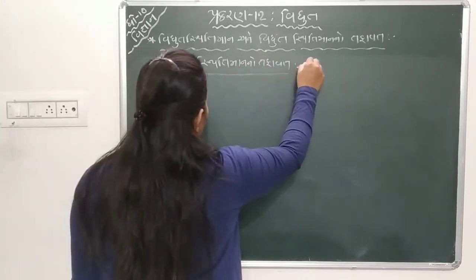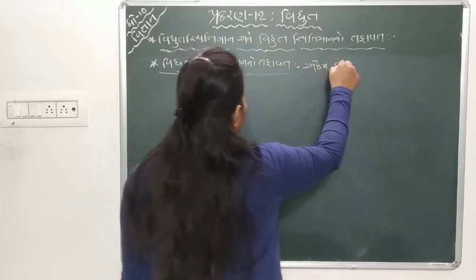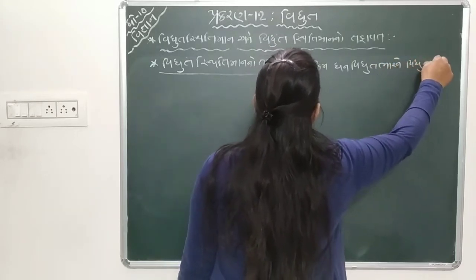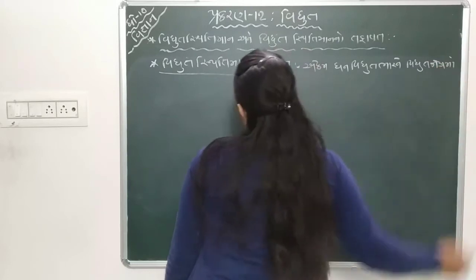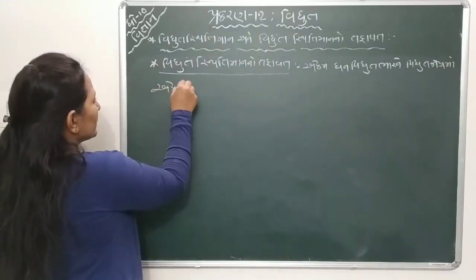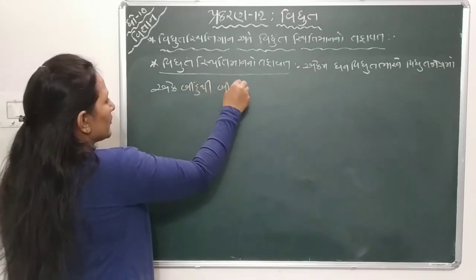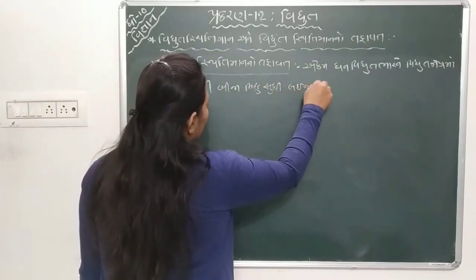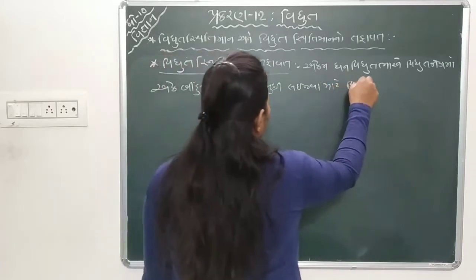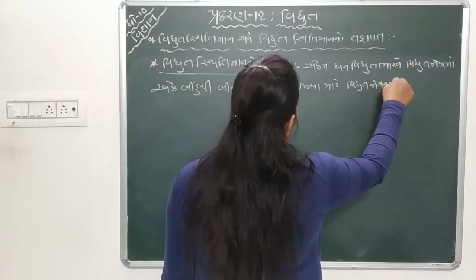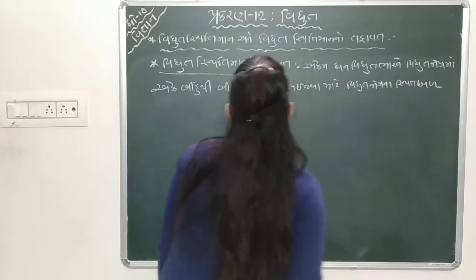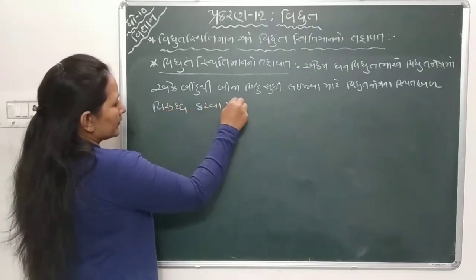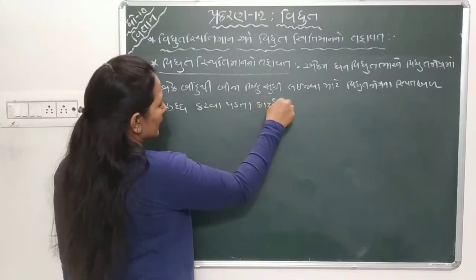Eni vyakhya mujab vapari shakay: Ekam dhan vidyut bharne vidyut kshetra na koi bindu sudi lai java mote vidyut kshetra na sthit badh virudh karva padta karyane te Vidyut Sthitiman kahe chhe.